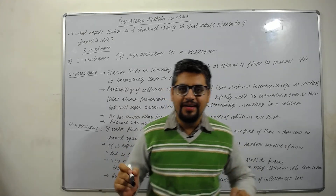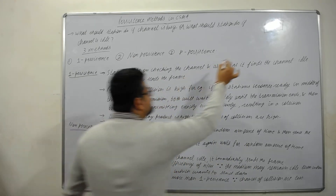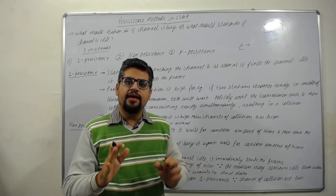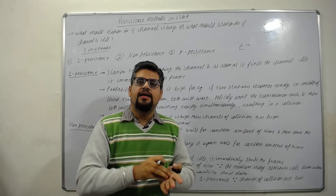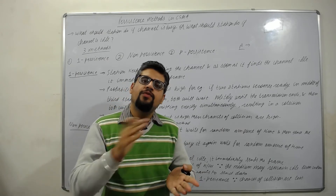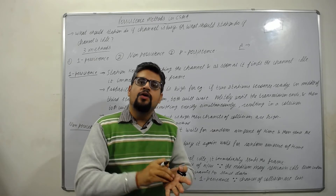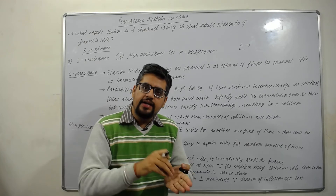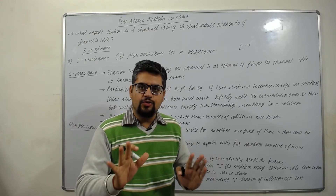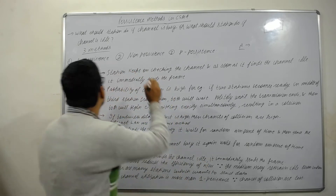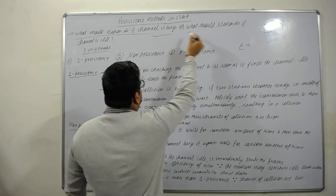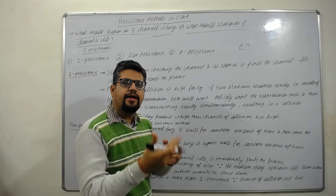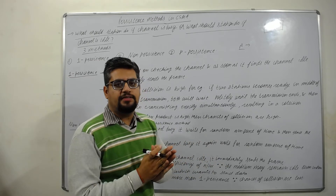Now we will see the persistence method in CSMA. Suppose we have a station A and it wants to send data. In CSMA, it will sense the channel first. If the channel is busy, it will wait. But how long will it wait? And if the channel is idle, will it immediately send data or wait? What should the station do if the channel is busy or idle? How will it behave? That is all defined in the persistence method.